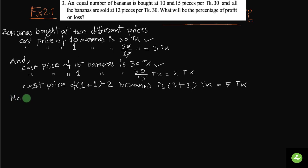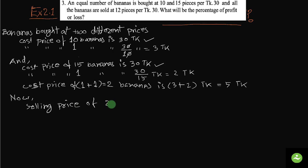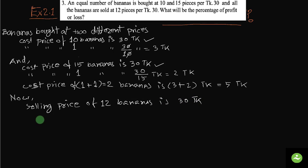So now if we know the selling price, we will know the profit or loss. We have to find out the selling price. The selling price of 12 bananas is taka 30.